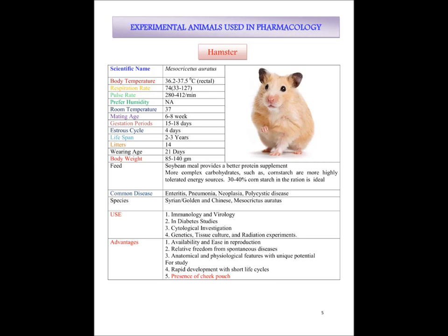The favorable use of hamster is in immunological and biological studies, diabetic studies, cytological investigation, genetic tissue culture and radiation experiments. The advantages of using hamster as an experimental animal are that they are easily available and easy to reproduce, relatively free from spontaneous disease, anatomically and physiologically similar to humans, and show rapid development with a short life cycle.